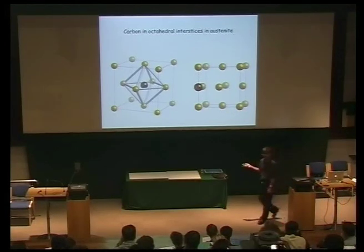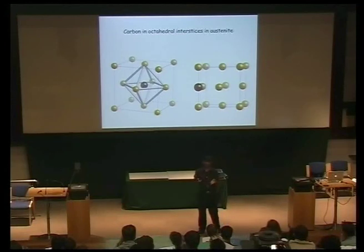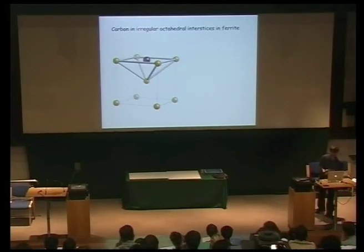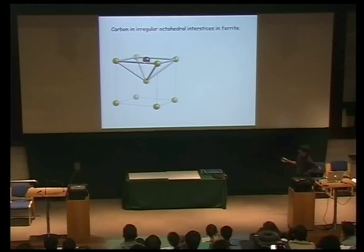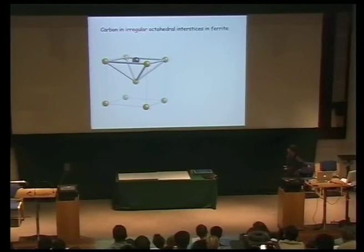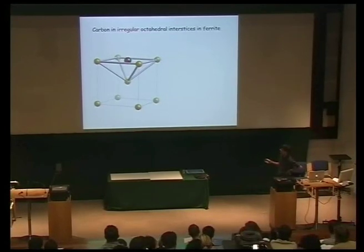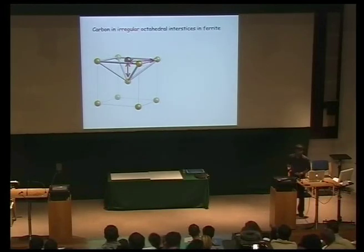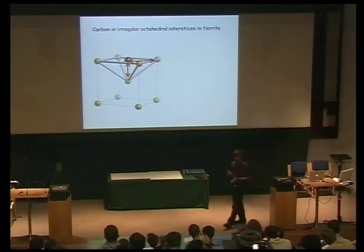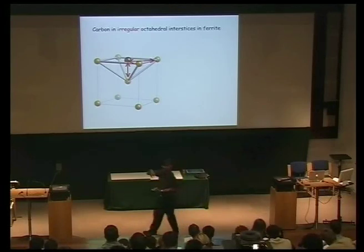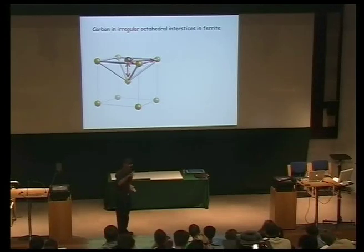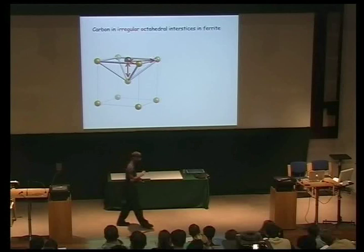I'm now going to show you the corresponding slide for a carbon atom in ferrite. This is an octahedral hole in a body-centered cubic lattice. The distance between this carbon atom and this iron atom is different from the distance between this and this. So although this is an octahedron, it's not a regular octahedron. It actually has two long axes and one short axis — so it causes an asymmetrical, tetragonal distortion. And that, of course, can interact with shear strain fields.